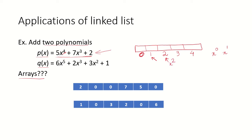So with this representation I can put a 2 at index 0. There is no coefficient for x or for x squared, so a 0 there. For x cubed the coefficient is 7, so I will put 7 there. For x to the power of 4 the coefficient is 5, so we put a 5 there.